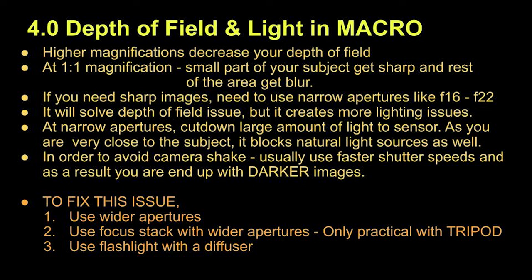Using narrow apertures will solve the depth of field issue, but it creates more lighting issues. At narrow apertures, a large amount of light to the sensor is cut down. As you are very close to the subject, it also blocks natural light sources. In order to avoid camera shake, you usually use faster shutter speeds, and as a result you end up with darker images. So how to fix this issue? Use wide apertures, use focus stacking with wide apertures — this is only practical with a tripod — or use flashlight with a diffuser.